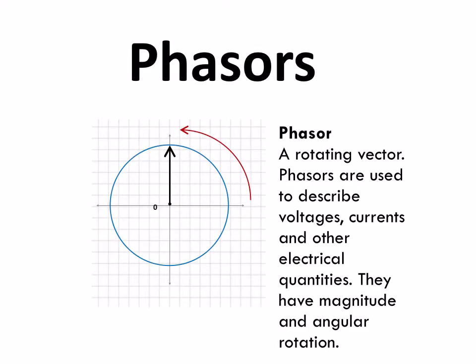This is video 3 in the AC theory unit and in this video we're going to look at adding phasors by calculation. We saw in video 2 that a phasor was really just a rotating vector and we can use them to describe voltages, currents, and other electrical quantities. They have magnitude but they also have angular rotation.